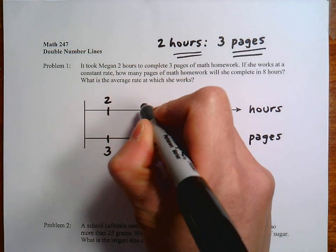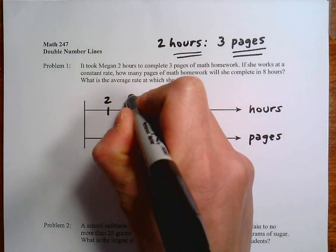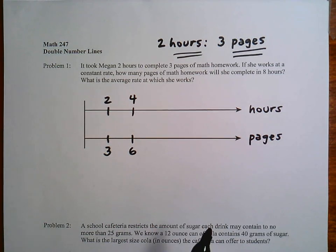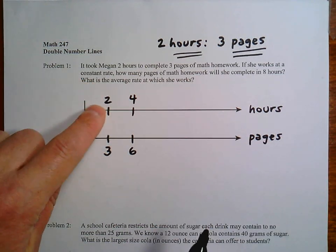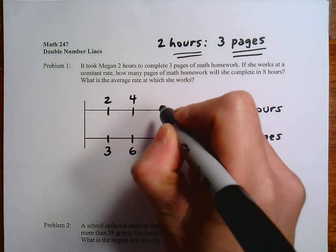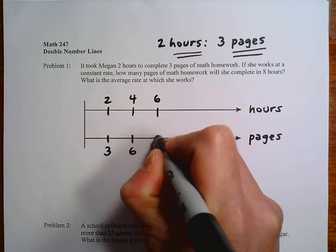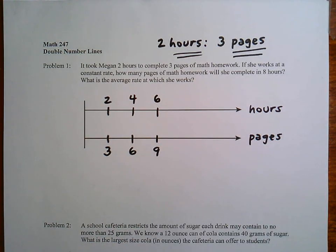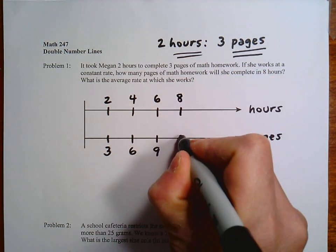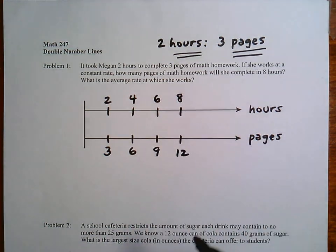And then you can solve the problem. So one way we can do it is in an additive way. So if it's 2 hours, 3 pages, you can add 2 here and add 3 here. And then you can continue this process. So I'm going to add 2, add 3, and then this will do it. Add 2, add 3.